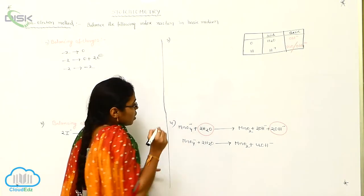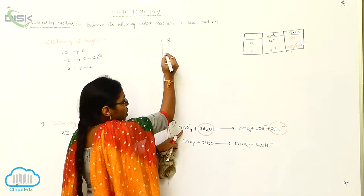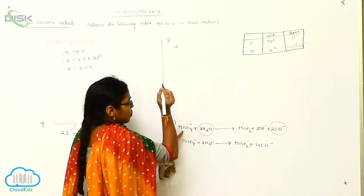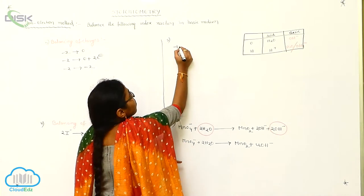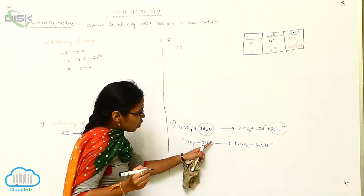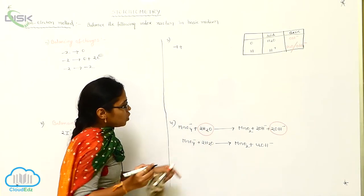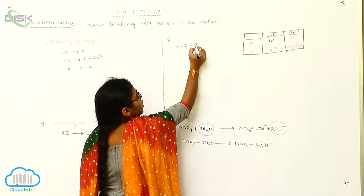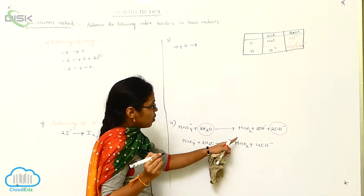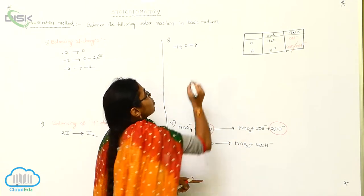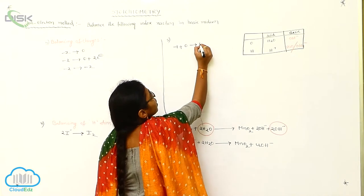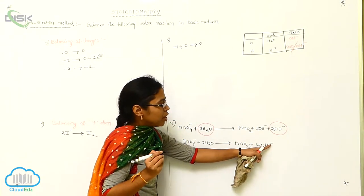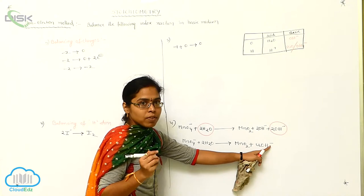Fifth step for the second half-reaction. What is the charge upon the MnO₄⁻ ion here? Minus one. Is there any charge upon the water molecule? No. So you can write here the zero. The charge upon the MnO₂ on the product side is nothing, so write zero. Next, what about the OH⁻?